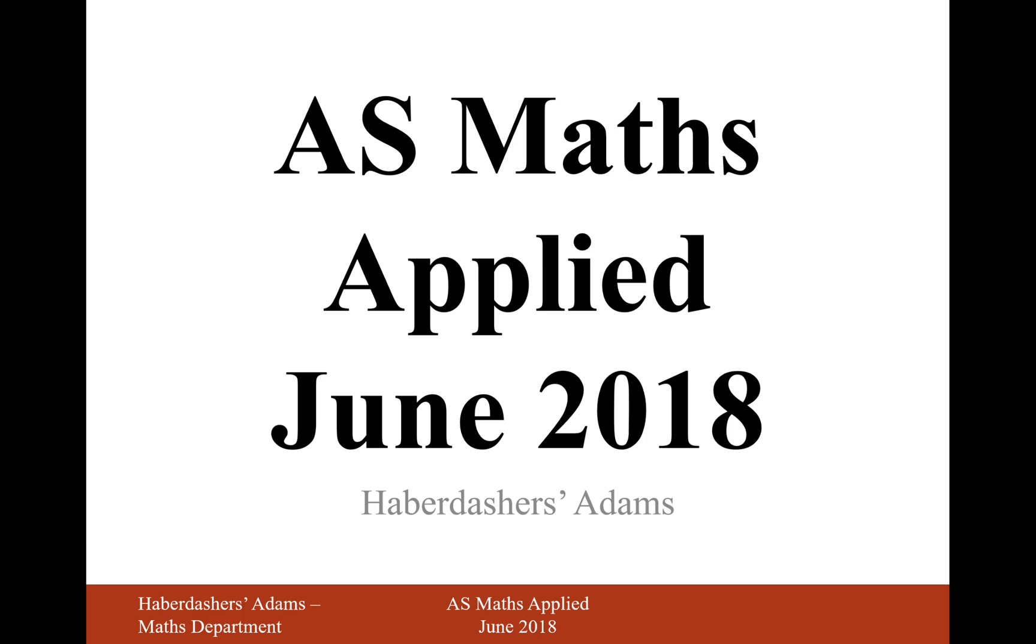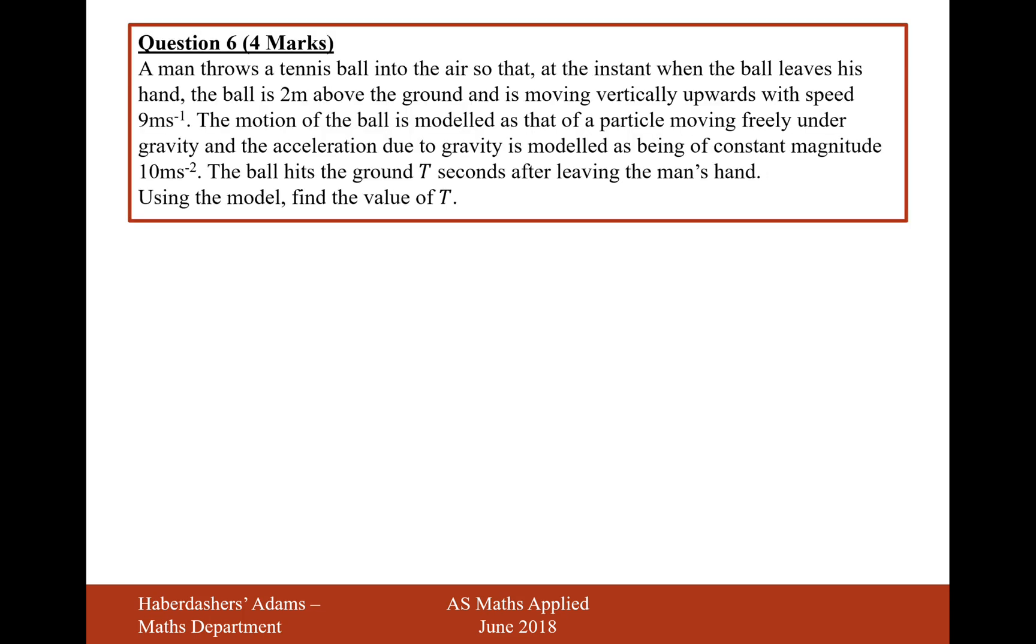Hello there and welcome to the June 2018 Applied Paper, here we're looking at question 6. A man throws a tennis ball into the air so that at the instant when the ball leaves his hand, the ball is 2 metres above the ground and is moving vertically upwards with a speed of 9 metres per second.